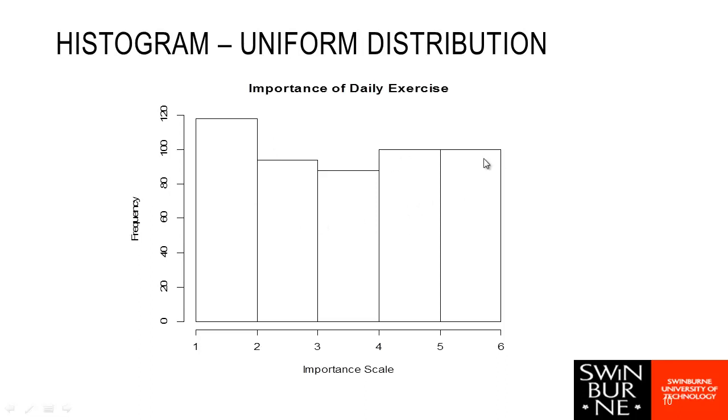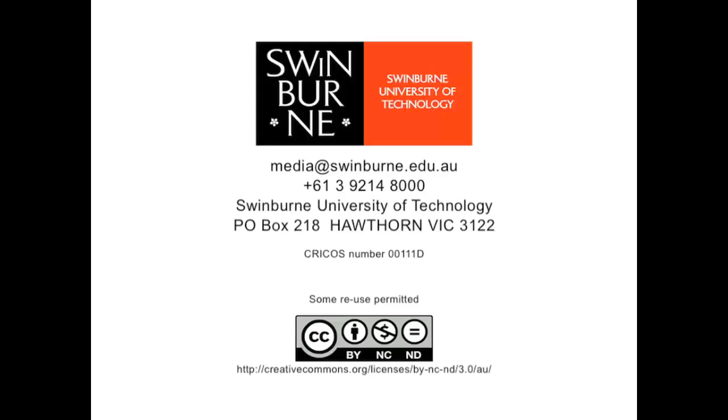What we're measuring is the importance of daily exercise, and it seems to be pretty evenly spread. We've got some people who think it's very important, some people who are kind of not all that important, some people who think it's not important at all. So fairly even spread. I would say this is closer to a uniform distribution than any of the others. This has been a Swinburne production.